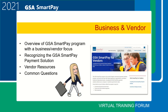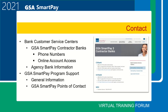The business and vendor section contains information specific to businesses, including an overview of the GSA SmartPay program, recognizing the GSA SmartPay account and tax exemption, vendor resources, and common questions. The most frequently asked questions by vendors are about tax exemption or how much it costs to accept the GSA SmartPay card. The GSA SmartPay accounts operate just like the commercial market, so if a vendor already accepts Visa and MasterCard, they can also accept the GSA SmartPay payment solution at no additional cost.